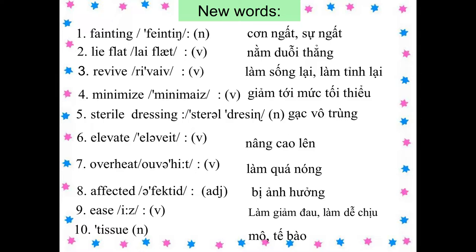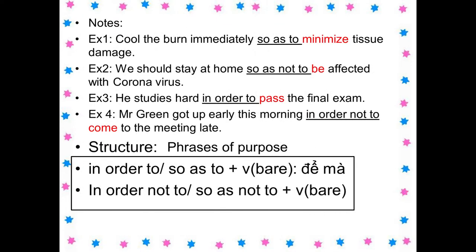Các bạn thực tập đọc từ và viết từ mới vào tập. Trong bài đọc hôm nay có xuất hiện cụm từ 'so as to'. Các bạn cùng tham khảo 4 ví dụ sau. Number 1: cool the burns immediately so as to minimize tissue damage. Hãy làm mát vết bỏng ngay lập tức để giảm đến mức tối thiểu sự thiệt hại mô. Các bạn thấy sau 'so as to' ta dùng động từ nguyên thể.